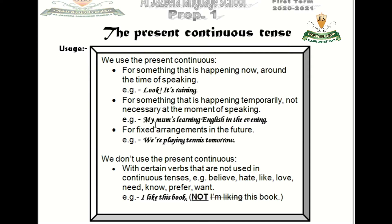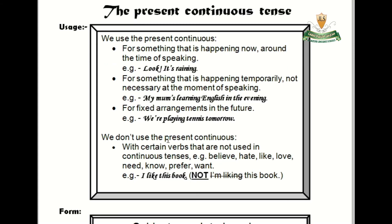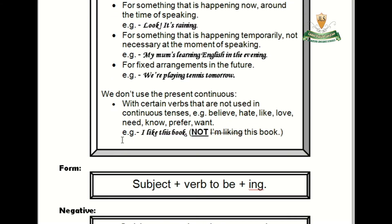For example: my mom's learning English in the evening — the apostrophe is the abbreviation for 'is'. We also use it for fixed arrangements in the future, something planned or arranged: we are playing tennis tomorrow. We don't use present continuous with state verbs like believe, hate, like, love, need, know, prefer, or want.